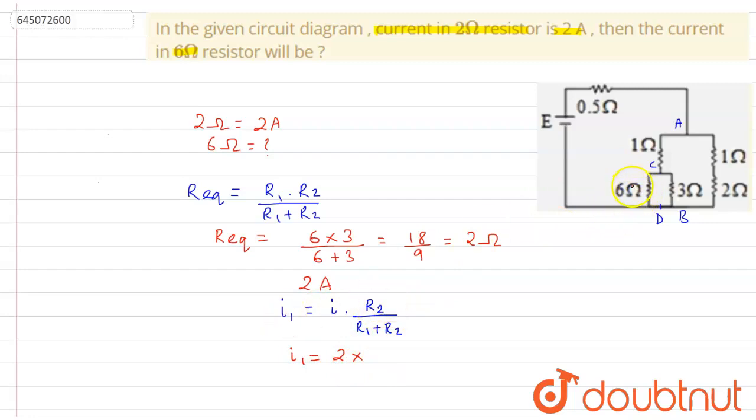So we have taken I1 as the current through 6 ohm. So R2 will be 3 ohm. So R2 is 3 ohm divided by R1 is 6 plus here it is 3.